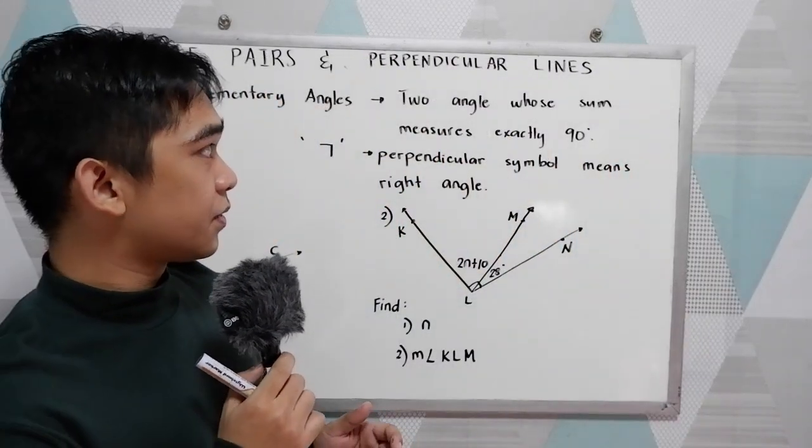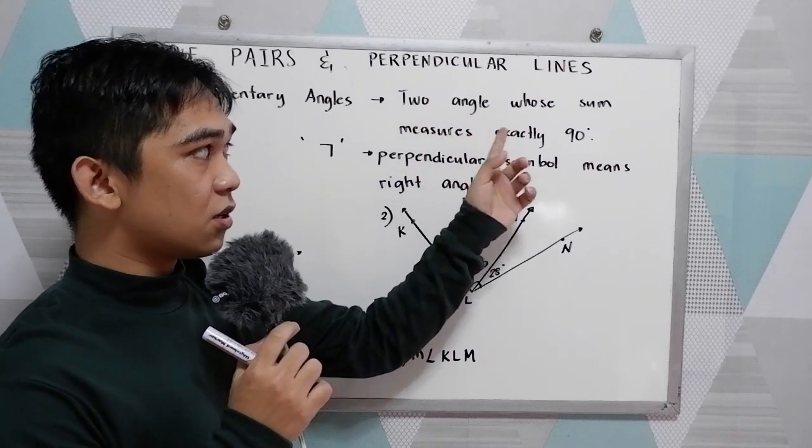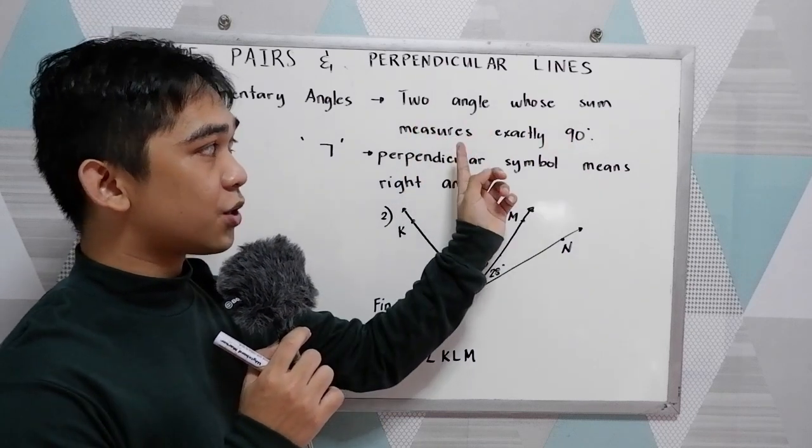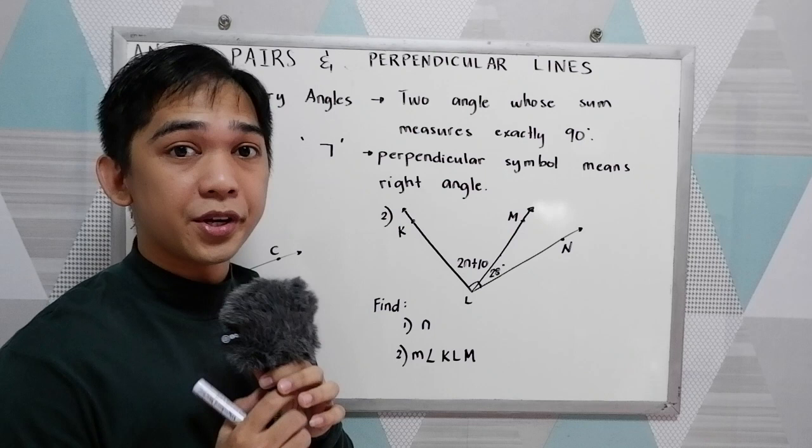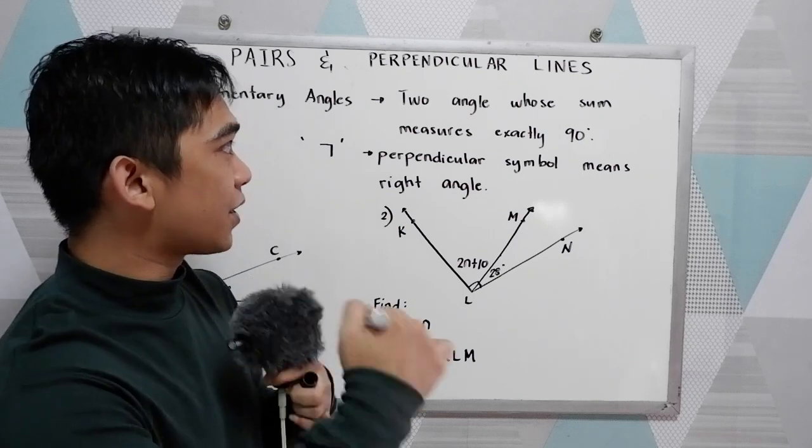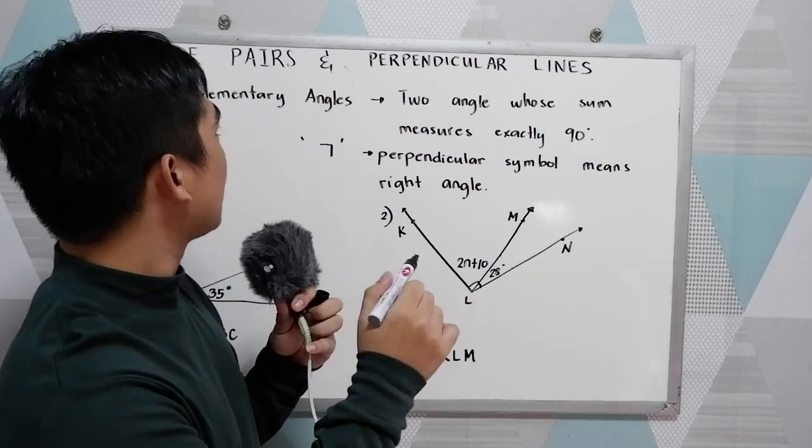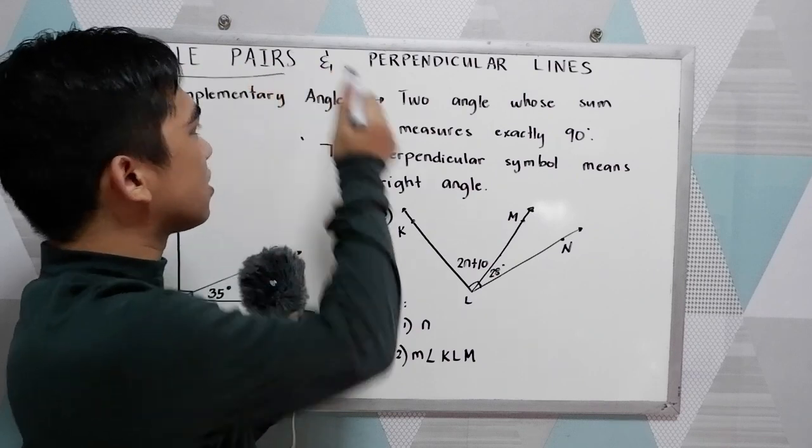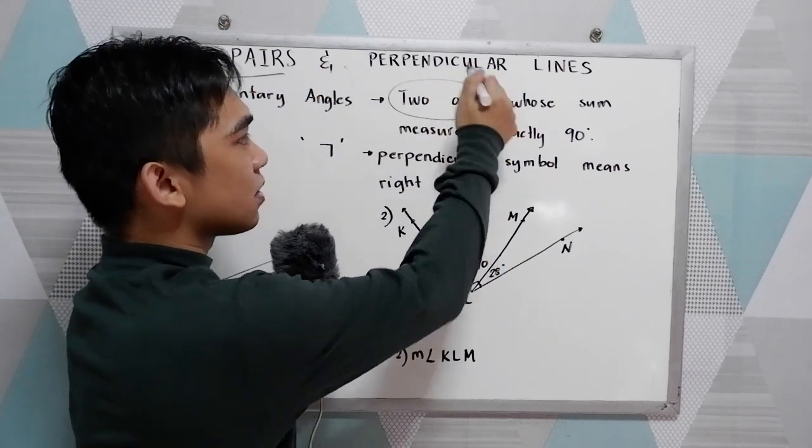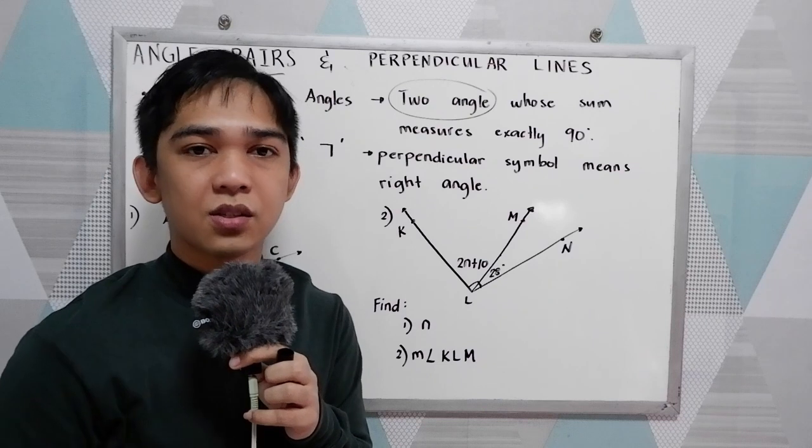Complementary angles are two angles whose sum measures exactly 90 degrees. Notice in our definition we are dealing with angle pairs, so we have two angles whose sum measures exactly 90 degrees.